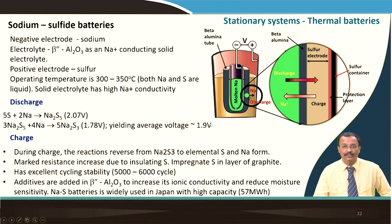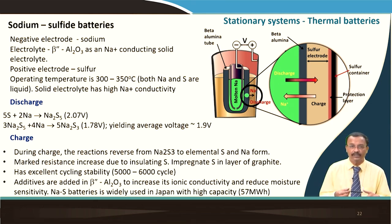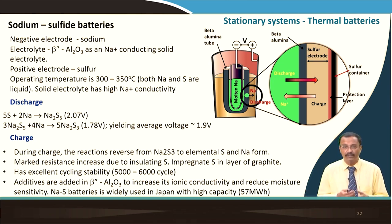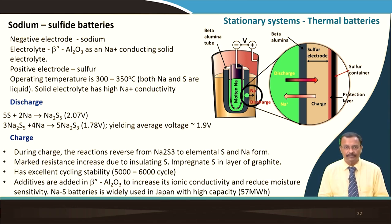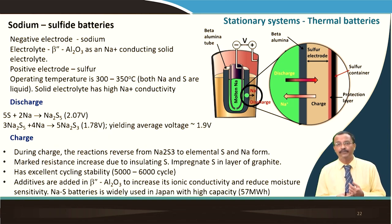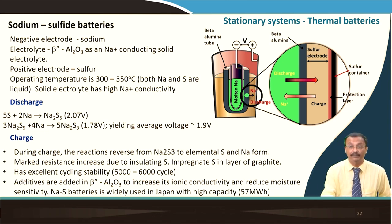The reactions yield an average voltage of about 1.9 V. During charging, the reaction reverses from Na₂S₃ to elemental sulfur and sodium. Resistance increases during charging due to the insulating sulfur, so sulfur is impregnated in a layer of graphite. The sodium sulfur battery has excellent cyclability — about 5000 to 6000 cycles — and additives are added to the beta-alumina solid electrolyte to increase ionic conductivity and reduce moisture sensitivity. Sodium sulfur batteries are widely used in Japan with capacity as high as 57 MWh.